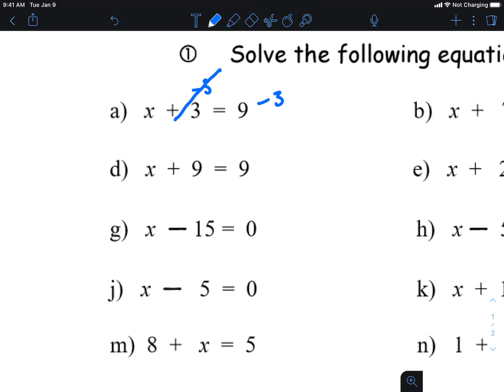Now the plus three and the minus three cancel because three minus three is zero, and we get x is equal to nine minus three, which is equal to six. So we agree?